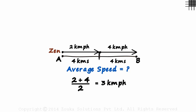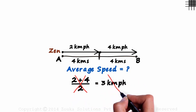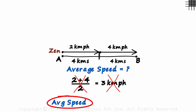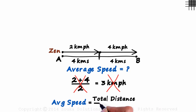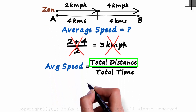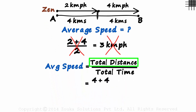As some of you might have guessed, this is a classic mistake that many students make. So what is the average speed? There is just one thing we need to understand: average speed equals the ratio of the total distance traveled to the total time taken to travel that distance — total distance divided by total time. So let's see what it will be in this case. The total distance traveled is 4 plus 4, or 8 kilometers.